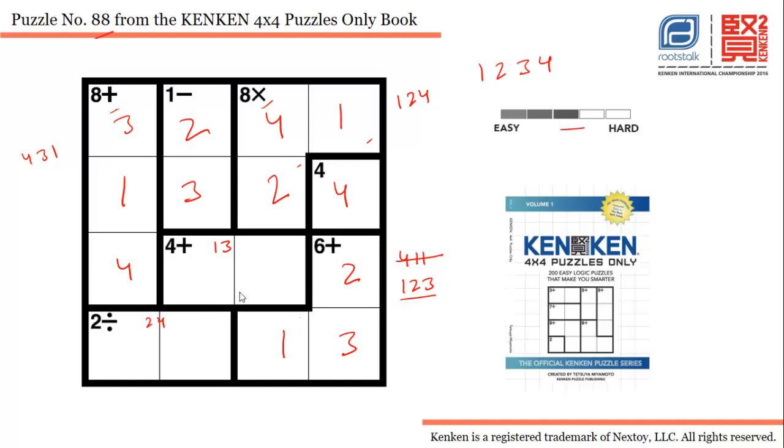So 3 will be here because 3 is already there, 1 and 4, 2. Now that's quite easy. The most important thing in this puzzle is to try to write reference numbers, because once you have the reference numbers written near the cages, it will certainly help you a lot to solve the puzzle.